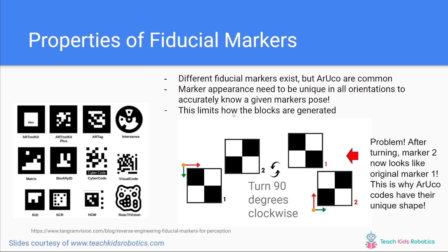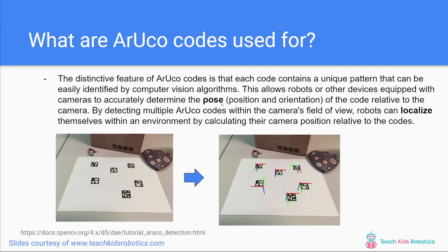So what are ArUco codes used for? Why is it important to have that unique visual signature? The distinctive feature of ArUco codes is that each code contains a unique pattern that can be easily identified by computer vision algorithms. By being easily identifiable, it doesn't take a lot of computing power to identify these objects within the image, allowing quick detection. This allows robots or other devices equipped with cameras to accurately determine the pose — the position and orientation — of the ArUco code relative to the camera.